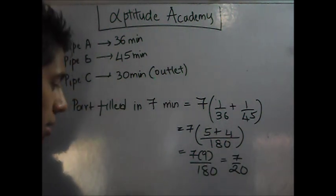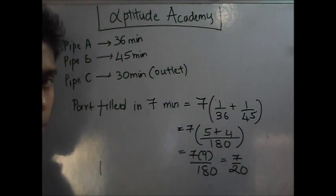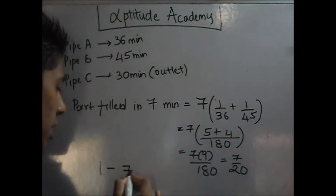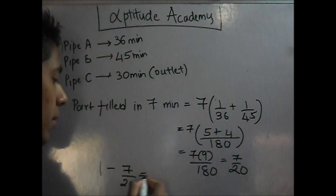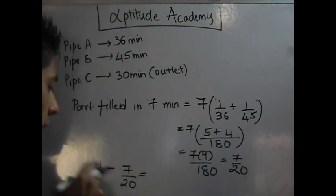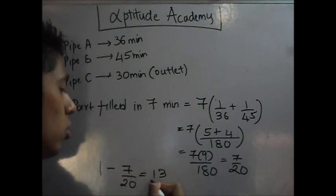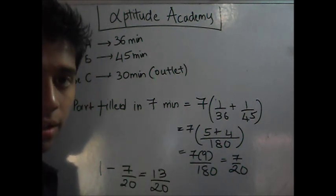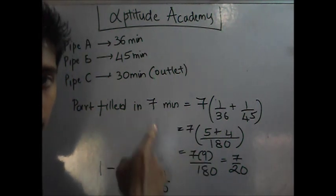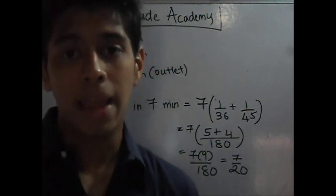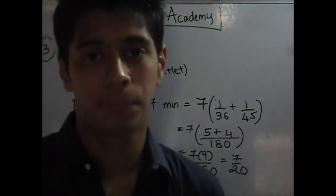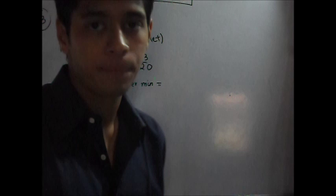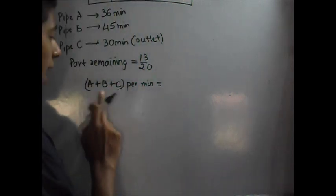Now, what is the remaining part? Let's consider 1 to be a full tank, 20 upon 20 minus 7 over 20. What is this? 20, you take it here. So, it becomes 13 over 20. Now, this is the part of the tank that is remaining to be filled after the 7 minutes. Now, let's calculate how much time will it take if all 3 pipes are working. The remaining part is 13 over 20. Let's see how to fill that. You've got A and B and C. C is active after the 7th minute.